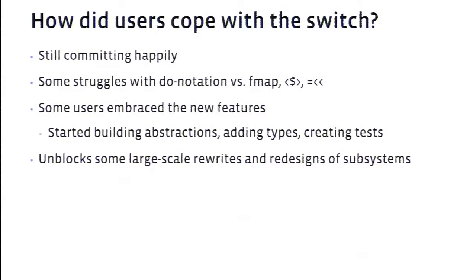How did they cope with the switch? They're still committing happily and getting their jobs done. They slowed down slightly due to a learning curve. There were some struggles we hadn't anticipated around whether to use do-notation versus the nice combinators Haskell provides — people wanted to use the shorter versions rather than do-notation, so we switched tack and started using more elaborate combinators. Then some users started embracing new features: building abstractions, using types — which weren't in the old language — creating tests, and making the code base nicer. Now some large-scale rewrites and redesigns of subsystems are unblocked by the move to Haskell.